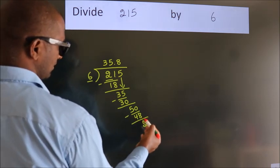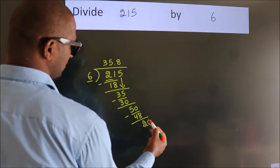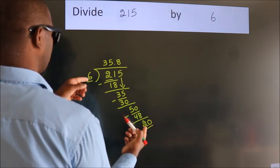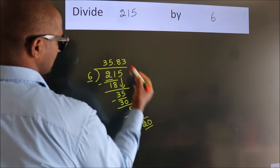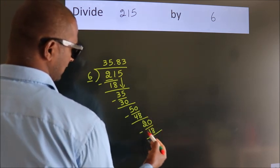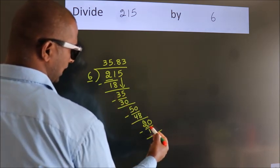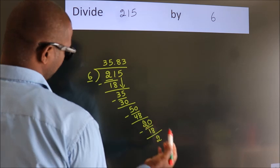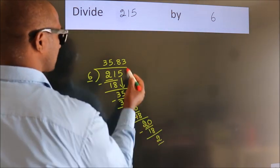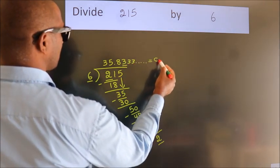After this, we already have the decimal. So directly take 0. So 20. A number close to 20 in 6 table is 6 threes 18. Now we subtract. We get 2. Now you observe. We had 2 here and we got 2 again. That means this number keep on repeating. So this is our quotient.